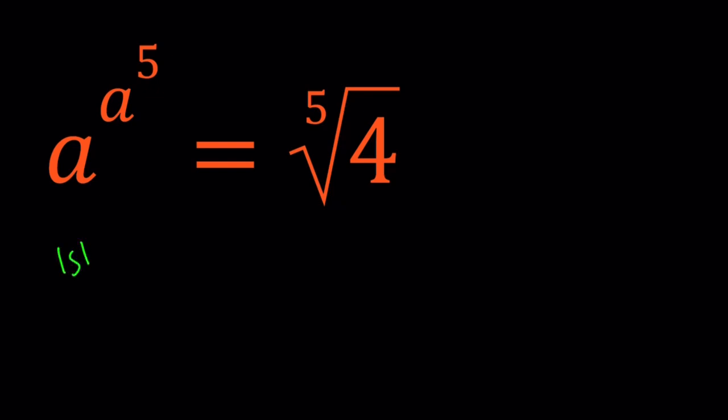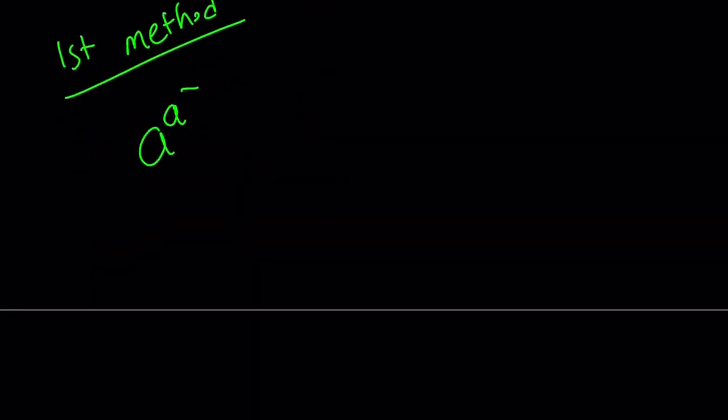Let's start with the first method. For my first method, I'm going to use substitution. Let me rewrite the problem: a to the power a to the power 5 equals the fifth root of 4. And here's what I'm going to do.